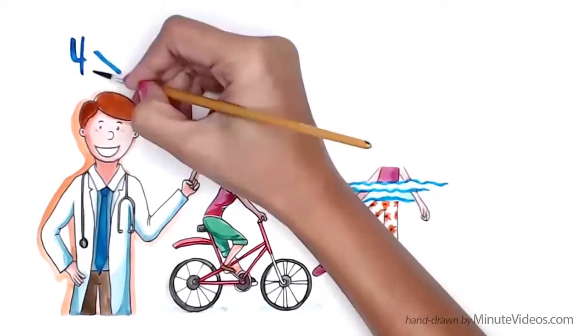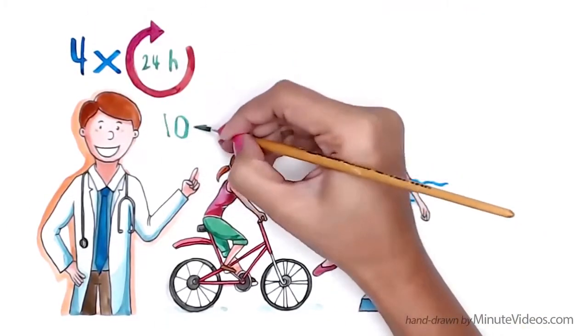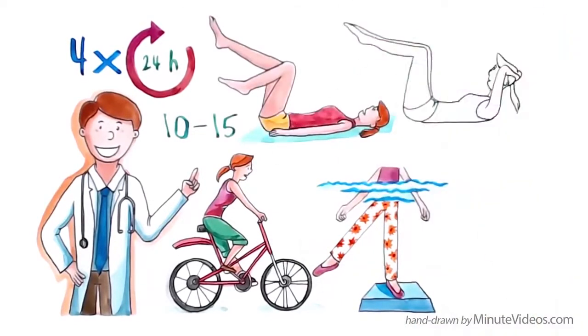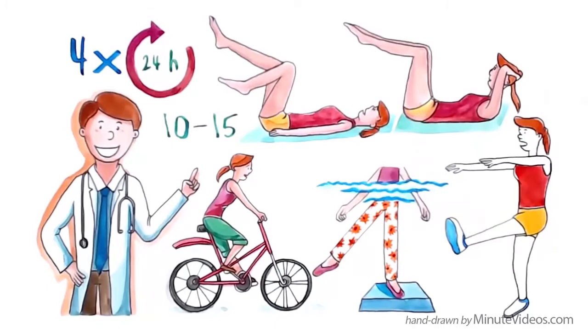It's best to exercise four times each day in short 10-15 minute bursts, including cycling on your back, crunches and one or two legged squats.